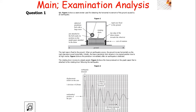In this question there's a lot of information to decode before we start answering. Figure 1 shows a seismometer used to detect the horizontal movement of the ground caused by an earthquake. The rigid case is fixed to the ground. When an earthquake occurs, the ground moves horizontally so the rigid case also moves horizontally. Initially, the heavy pendulum bob remains in its original position due to its high inertia. Figure 1 shows the pendulum immediately after the earthquake is detected, and the rotating drum moves at a steady speed.